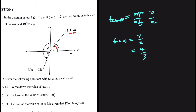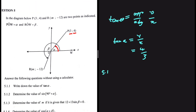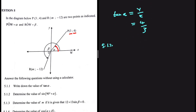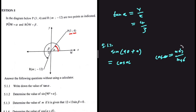Let's move to the equation that follows: 5.1.2 — determine the value of sine of 90 degrees plus alpha. Sine of 90 plus alpha equals cos of alpha. Now we just need to figure out what cos of alpha is. Cos of theta equals the adjacent divided by the hypotenuse, the adjacent usually being x and the hypotenuse r. We have x equals 3, but we need the hypotenuse.